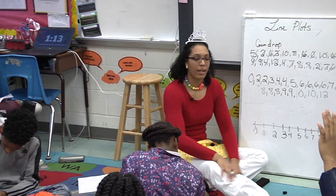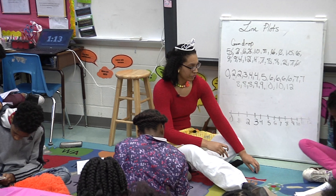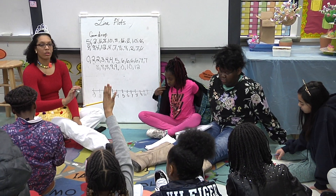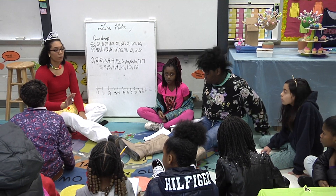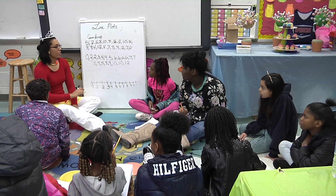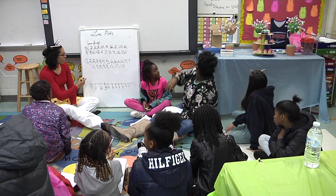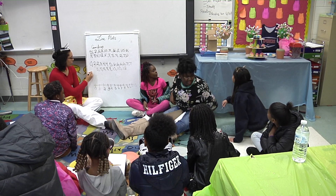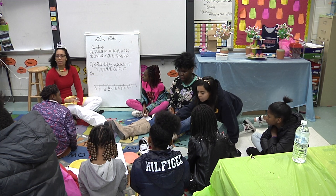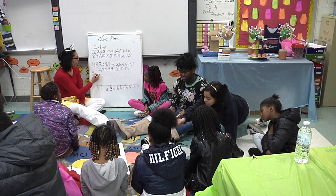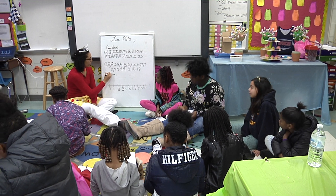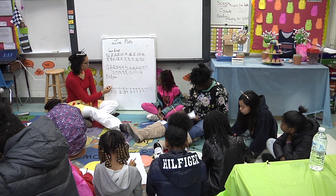Making your line plots. So now you've got to draw your X's above. But first you've got to make a key. Oh, first we need a key — good job! The shout-out! Can you give her a gold coin, please? So our key — each X equals one gumball, one gumdrop. We'll just put one piece of gum.